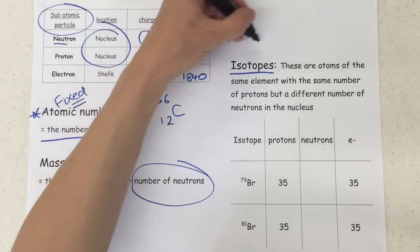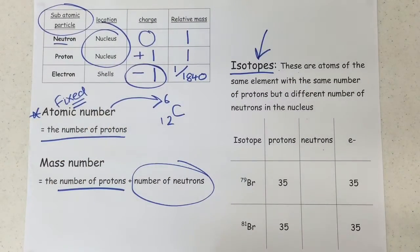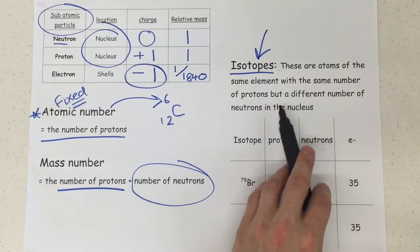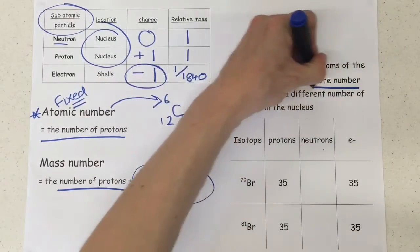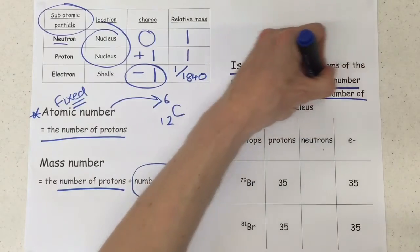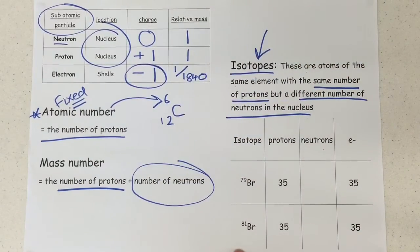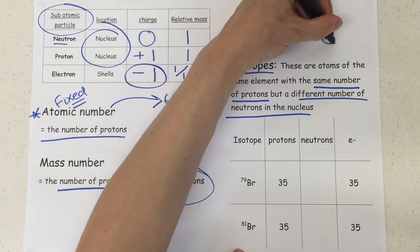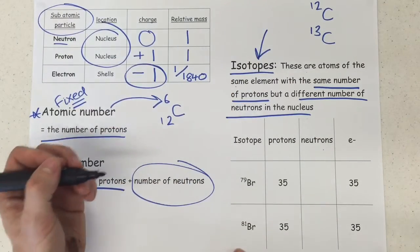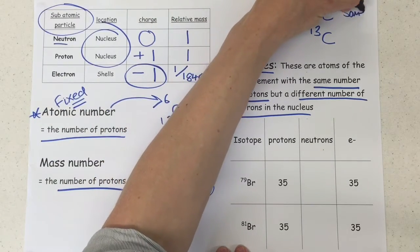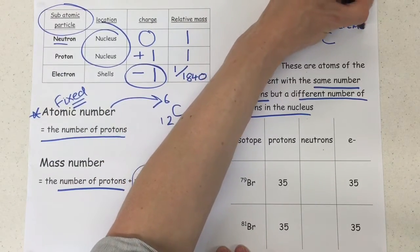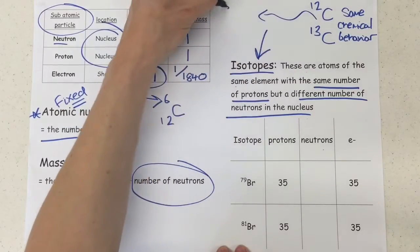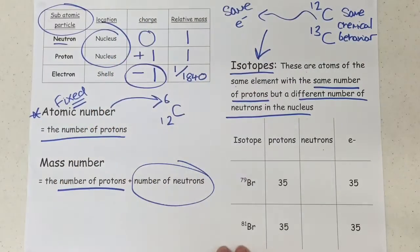So just to go back to it once again, why might the number of neutrons vary? Well, this is because of isotopes. Now, isotopes, by definition, these are atoms of the same element with the same number of protons, but a different number of neutrons in the nucleus. Now, you do have to say in your definition, same number of protons, and you have to say that they have a different number of neutrons. Their chemical reactivity, though, is identical. So if I add two different isotopes of carbon, for instance, carbon-12 and carbon-13, these are two different isotopes, but their chemical reactivity is the same. So same chemical behavior. Now, the reason for that is because they actually have the same number of electrons, and electrons determine chemical behavior.